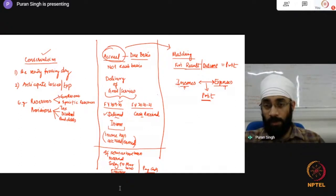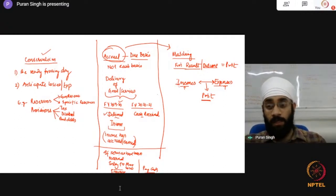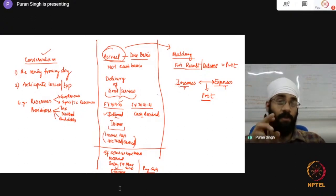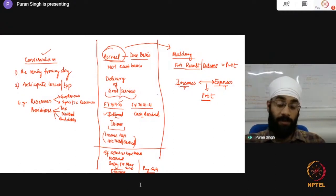From the pre-submitted questions: what is the meaning of a fixed asset? I think that has been answered earlier. Can there be a case where expenses and incomes are equal — no profit, no loss? Of course there can be. When we get to break-even point analysis later in the course, you'll see more about that.